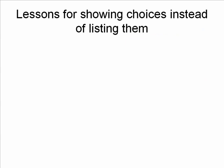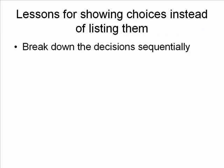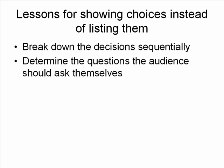Our lessons for showing the choices people have instead of simply listing them bullet by bullet: First, break down the decisions they have to make in a sequential order — what do they have to decide first, then what, and so on. Second, for each of those decisions, determine what question the audience should be asking, because in a lot of cases they don't know what question to ask themselves.